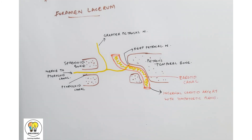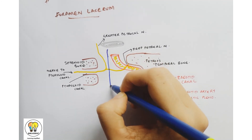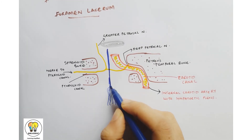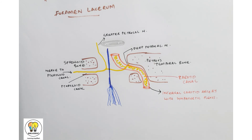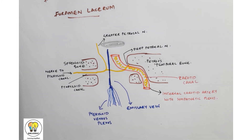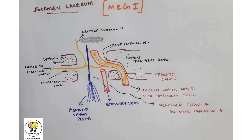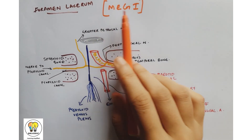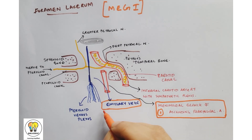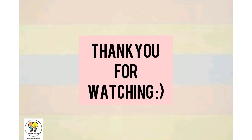Here is the cavernous sinus and the emissary vein, one of the structures passing through foramen lacerum, connecting the cavernous sinus to the pharyngeal venous plexus. Another structure is the meningeal branch of the ascending pharyngeal artery. Here is a mnemonic to remember the structures in foramen lacerum — MEGI: M for meningeal branch of ascending pharyngeal artery, E for emissary vein, G for greater petrosal nerve, and I for internal carotid artery.